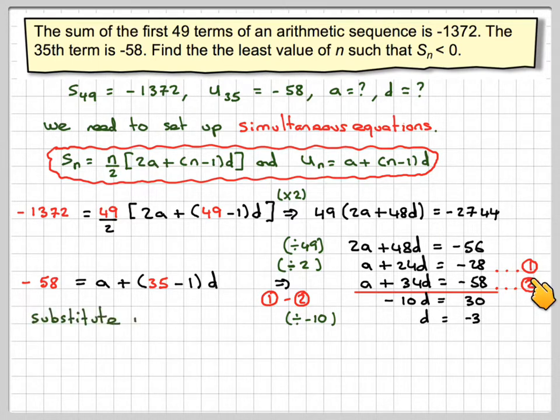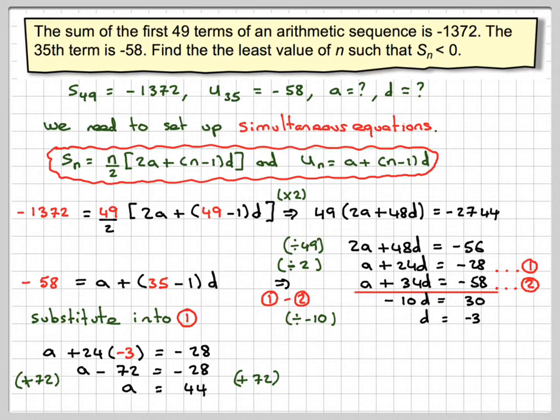Substitute into equation 1 to find A. So A plus 24 times D, minus 3, is equal to minus 28. A minus 72 is equal to minus 28. If I add 72 to both sides, we're going to get that A is equal to 44.